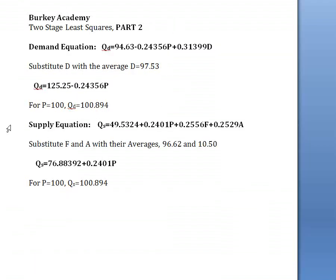Let's suppose we have those estimates using two-stage least squares for the demand equation. The demand equation is 94.63 minus 0.24 times price plus 0.31 times disposable income. We should have a positive slope on income and a negative slope on price for the law of demand.